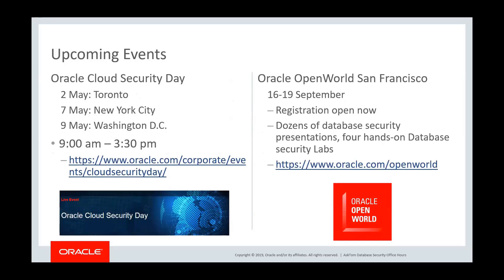There are a couple of upcoming events to call your attention to. If you're in North America, particularly on the East Coast, we have a series of Cloud Security Days where the database security team will be talking about autonomous database security — May 2, 7, and 9 in Toronto, New York City, and Washington D.C., from 9 to 3:30. Also, Oracle Open World San Francisco is just around the corner. Registration is already open, the call for papers has closed, and we'll have dozens of database security presentations and four hands-on database security labs.